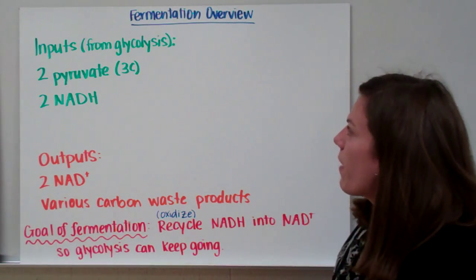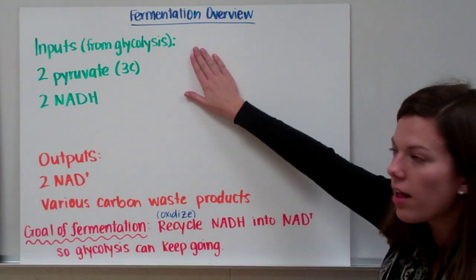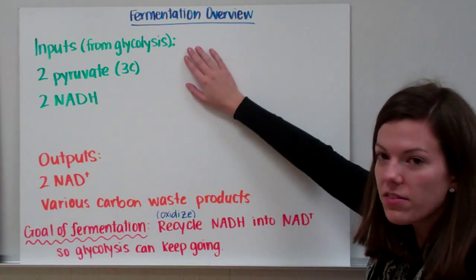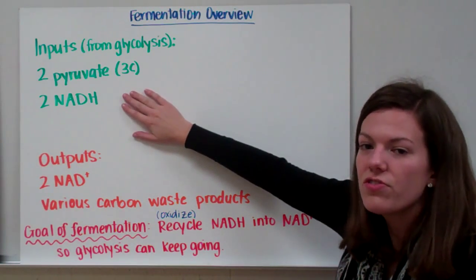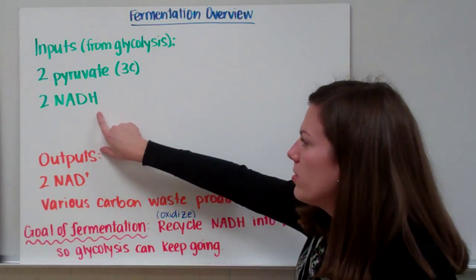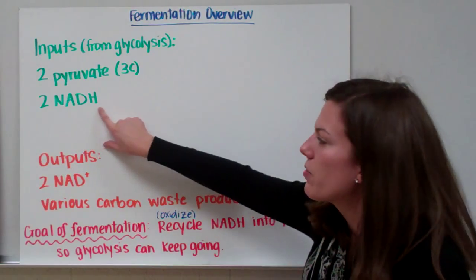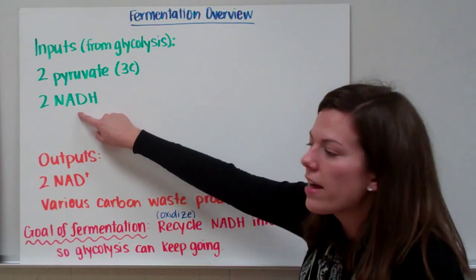All right, now for a final overview of fermentation. So in fermentation, our inputs from glycolysis, or our products of glycolysis, were two pyruvates and two NADHs. So we're going to take that pyruvate and change it to something else, and while we're doing that, we're able to lose this hydrogen off this NADH and recycle it back into two NAD+.